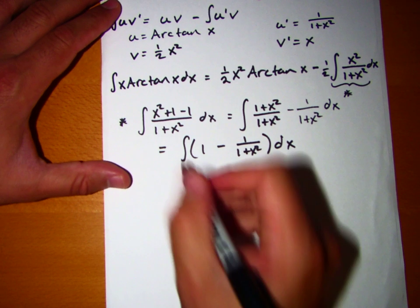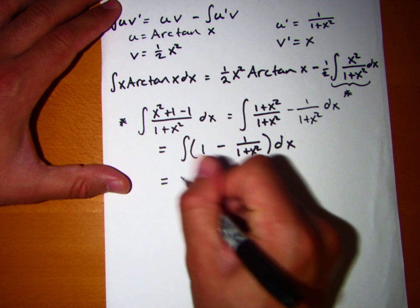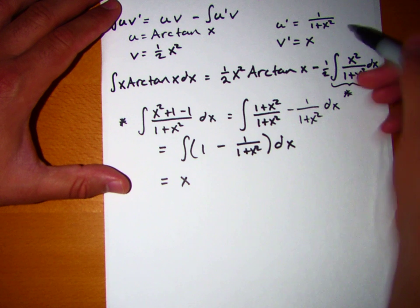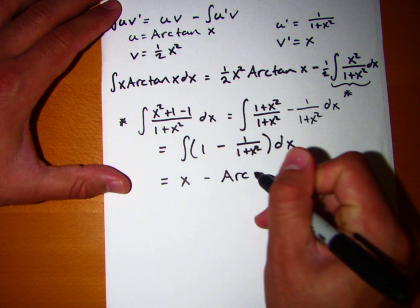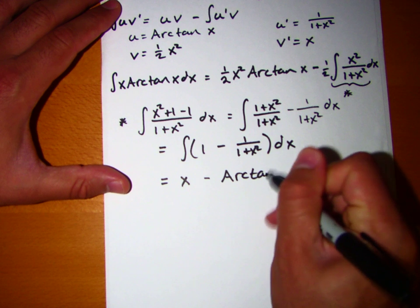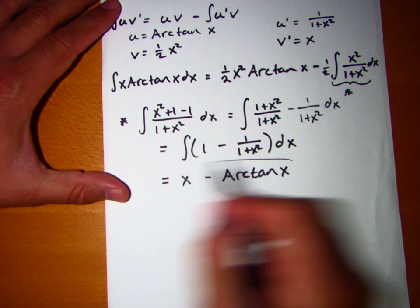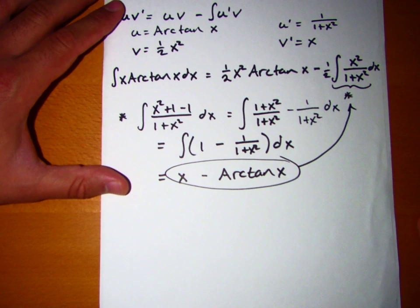And the integral of this is just going to be equal to, the integral of 1 is just x, and the integral of negative 1 over 1 plus x squared, we know, is just equal to negative arctangent x. And so this is the solution to that integral right there, that little one in the entire expression.